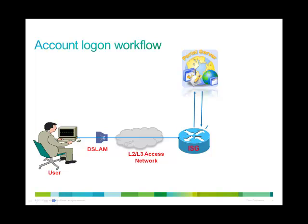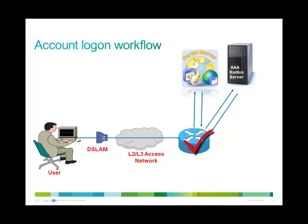The ISG sends this information to the AAA server, which in turn retrieves the user profile for authentication purposes. The AAA server authenticates the user profile and sends this information back to the ISG. On successful authentication, the ISG enables the user's auto logon services, and the user now has full access to the network.